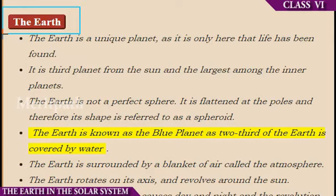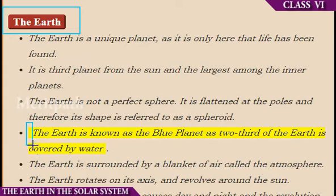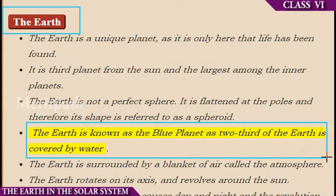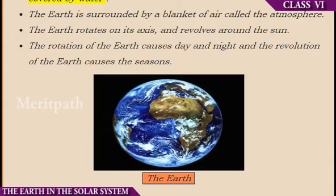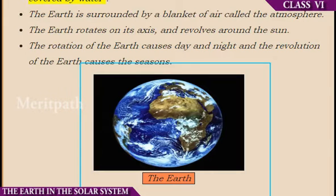Now comes our planet, the Earth. Earth is the third planet from the Sun and the fifth largest planet in the solar system. It is spherical in shape and flattened at the top and bottom. Earth is the only known planet where life exists. The Earth is known as the blue planet as two thirds of the Earth is covered with water. The temperature on Earth is neither too hot nor too cold, and water and air are present on Earth. Thus, right conditions are present on Earth to support life.